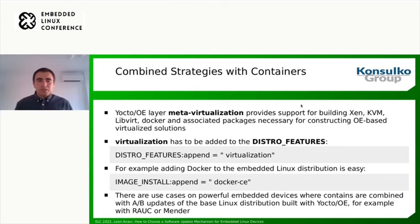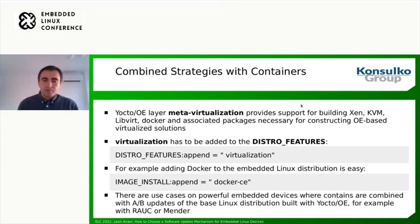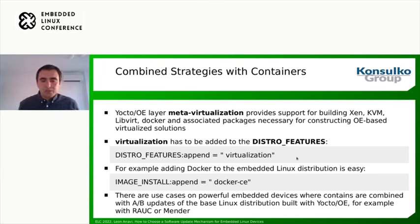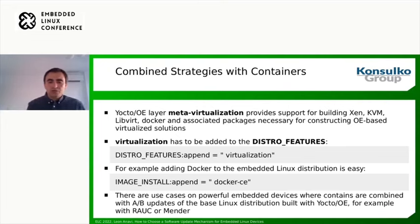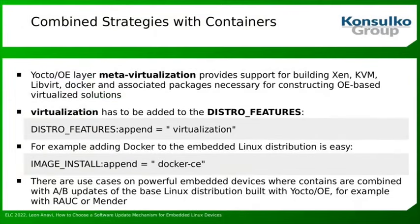We can combine A-B updates with containers through the Yocto and OpenEmbedded layer meta-virtualization, which provides support for building popular container solutions. Virtualization has to be added to the distro features using DISTRO_FEATURES_append. Adding Docker to an embedded Linux distribution is pretty easy once meta-virtualization is in place — you just add it to IMAGE_INSTALL_append. There are use cases on powerful embedded devices where containers are combined with A-B updates of the base Linux distribution built with Yocto and OpenEmbedded, for example with RAUC or Mender.